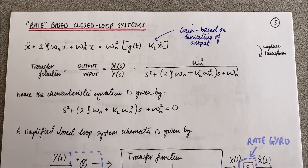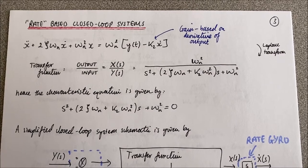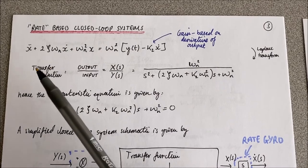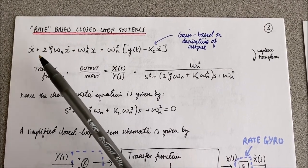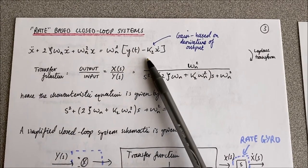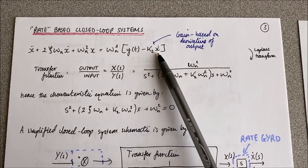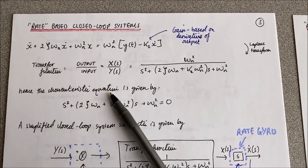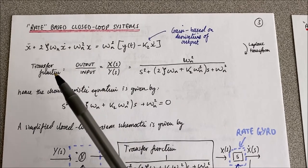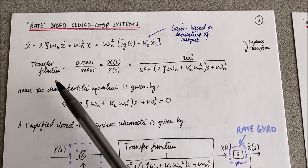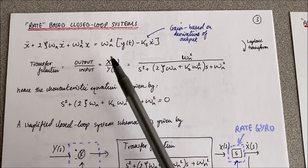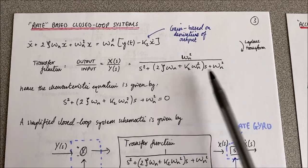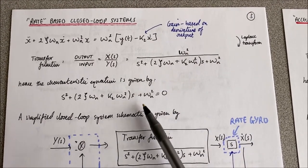The next type of closed-loop feedback is the rate-based method. For this, we have the same differential equation which defines the output of our system, but this time the gain is based on the derivative of the output, which is why it's called rate-based. Applying the Laplace transform to this ODE, we get the transfer function — output over input, x over y — and then the characteristic equation is given when the denominator is equal to zero.